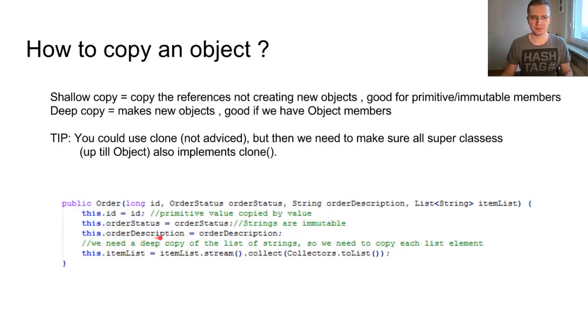And the same one for the description, because it's string. But the last one is the list of strings, item list parameter. So in that case, we need to make a deep copy of the list of strings. So we need to copy each element between the lists. We do not want to use the referenced one, but we want to copy the values from this list to our list. That is why we use the stream API and the collector to list.